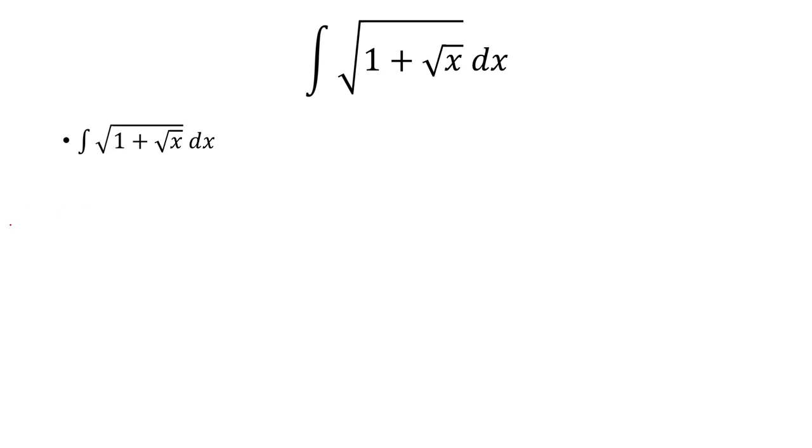So in this case, it'll be 1 plus the square root of x. The derivative will be 1 over 2 times the square root of x, dx.